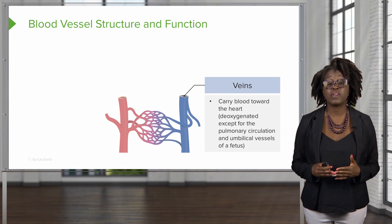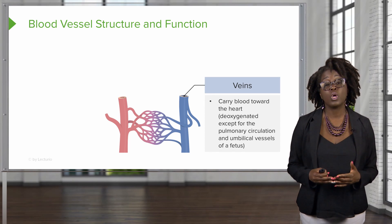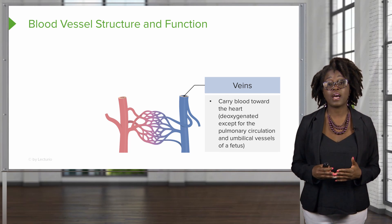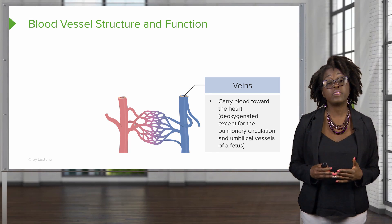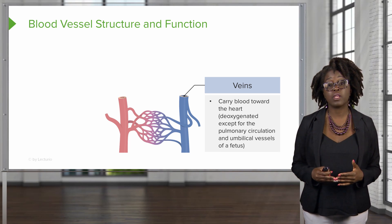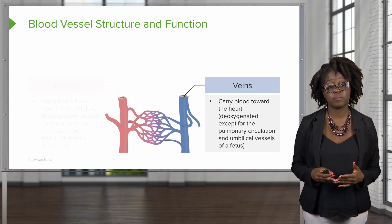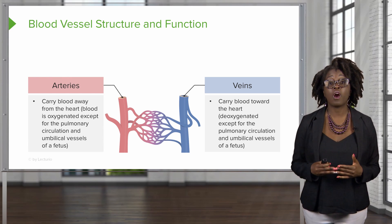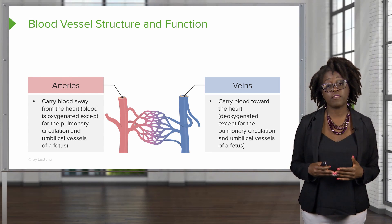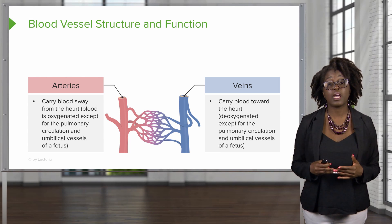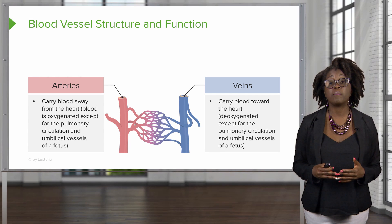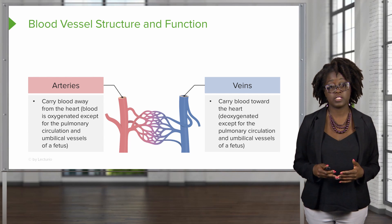The blood vessels include the veins, which are going to carry blood toward the heart and are mostly deoxygenated, with the exception of our pulmonary circulation and the umbilical vessels of the fetus. The second vessel type is our arteries, which carry blood away from the heart and are usually oxygenated, except in pulmonary circulation and the umbilical vessels of the fetus.